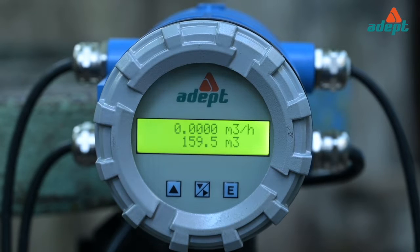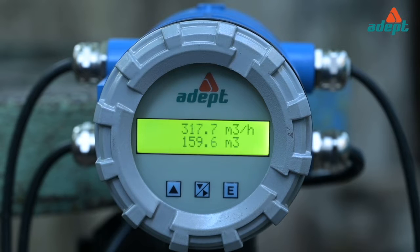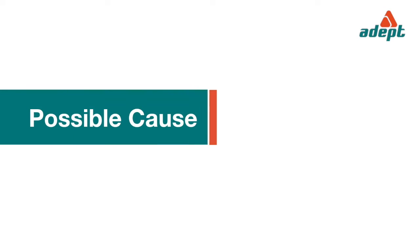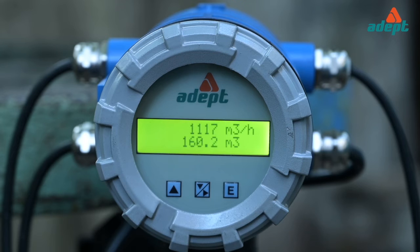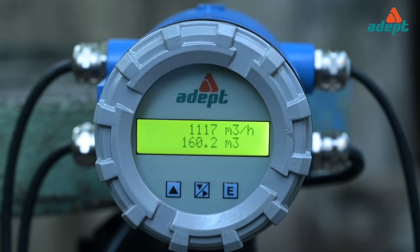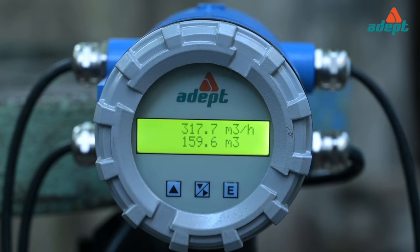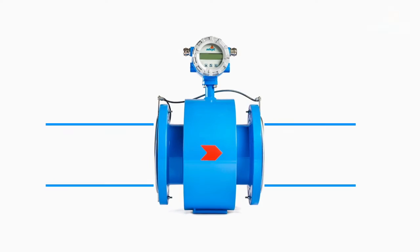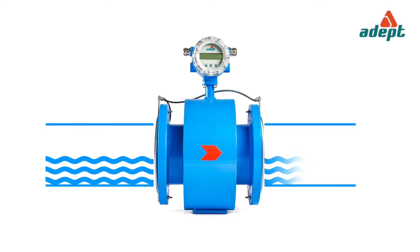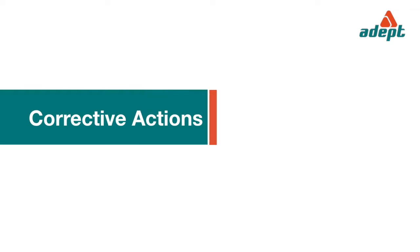Indicated flow rate drops to zero value intermittently and then recovers. Possible cause: the low flow cutoff level is not correctly set, or flow velocity is very low. Corrective action: reduce the cutoff level in small steps and check.